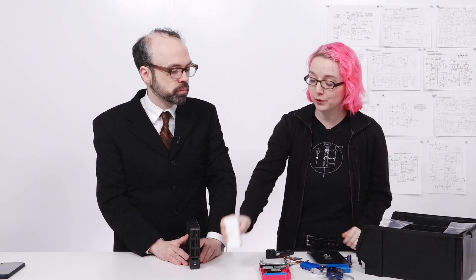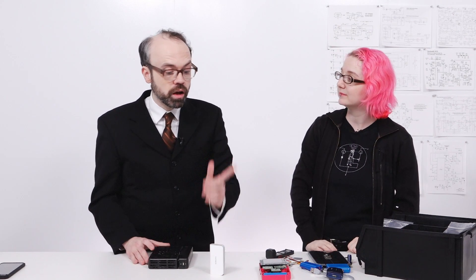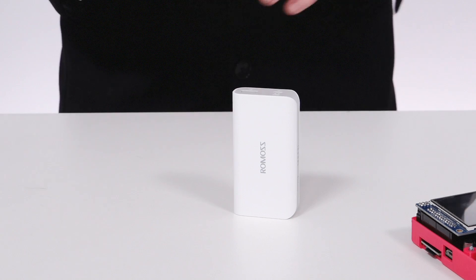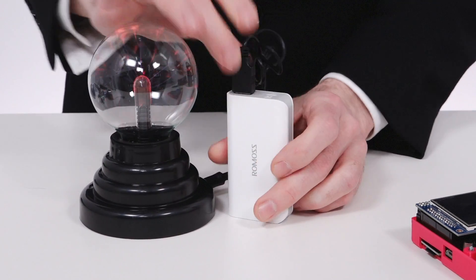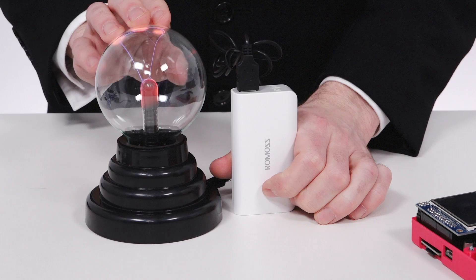These are pretty handy because they come with a lithium ion battery, a charger, and a boost converter. Makes it really easy to make portable USB devices, which means I can finally have a portable plasma globe. Now finally fun, finally.